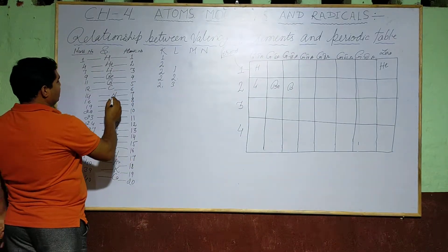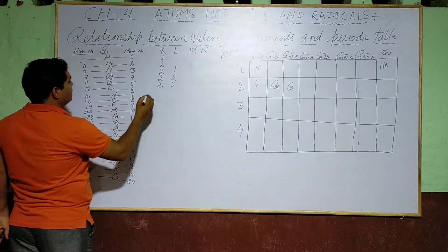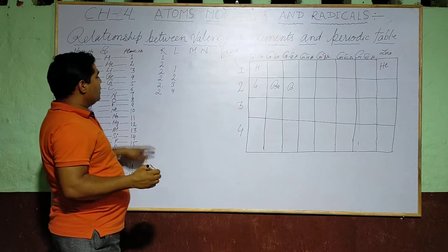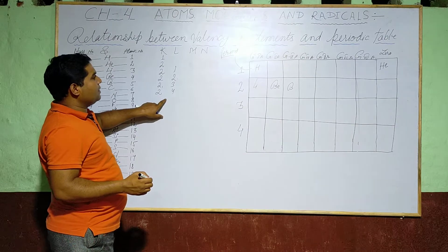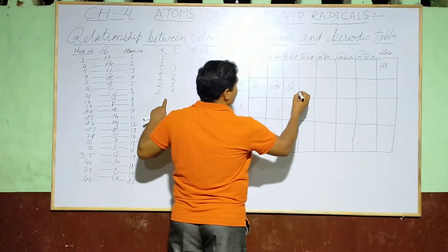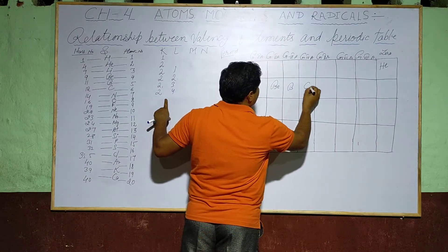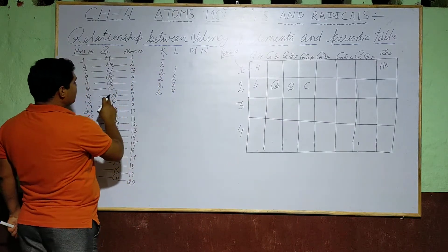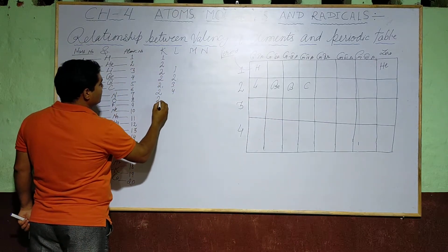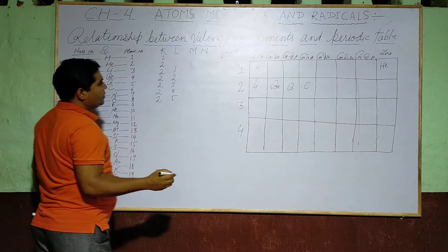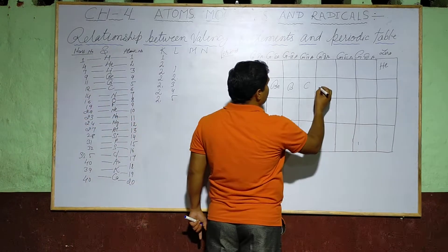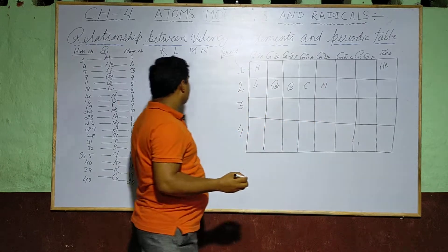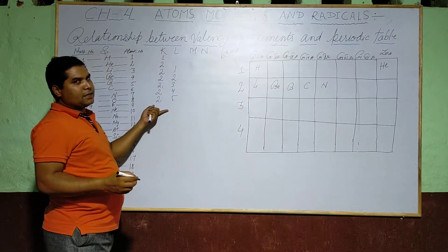Carbon has configuration 2 and 4, so it is placed in Period 2, Group 4A. Nitrogen has atomic number 7, configuration 2 and 5, so it is placed in Group 5A, Period 2.